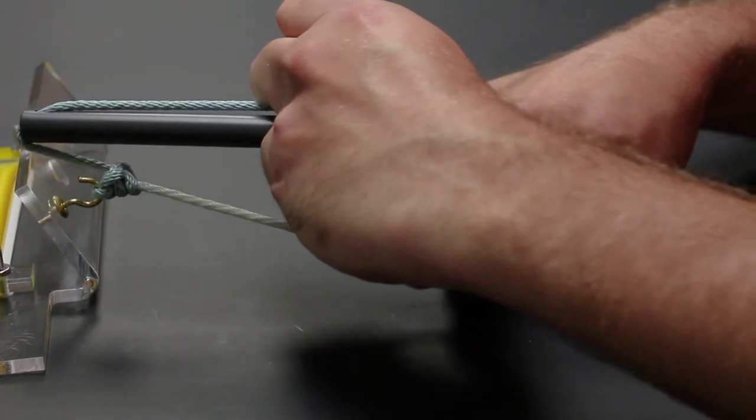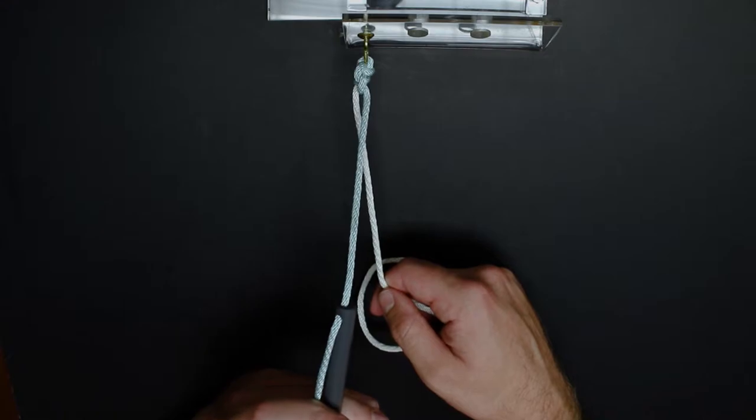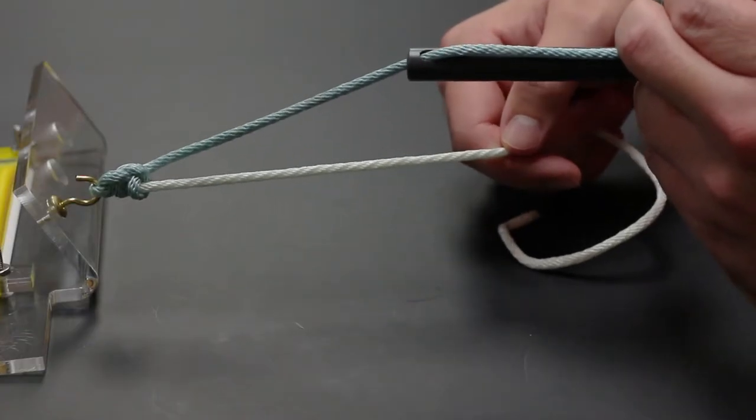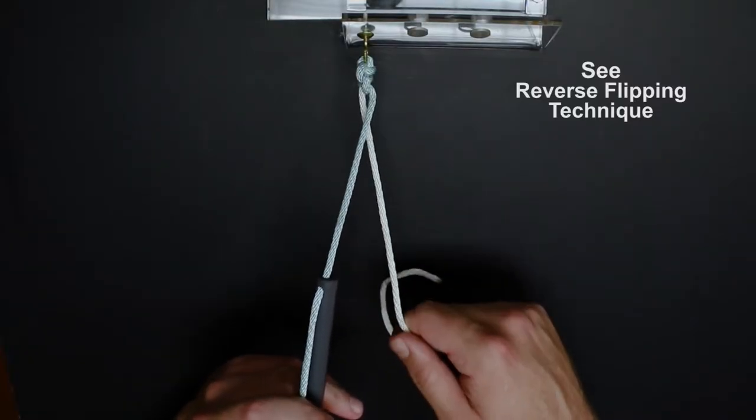We then will throw three reversing half hitches on alternating post. This can either be done by switching the post with the knot pusher or by alternating the tension placed on the suture limbs. Please see our other video on how to do this technique.